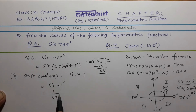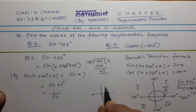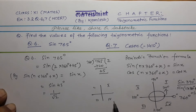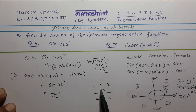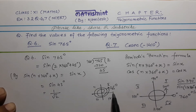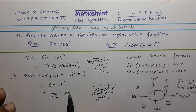In this case: this is our first quadrant, second quadrant, third quadrant, and fourth quadrant. For 765°, after one complete rotation and a second rotation, there are 45° more. So this 45° falls in the first quadrant. We know in the first quadrant all trigonometric functions are positive, so its answer is positive.